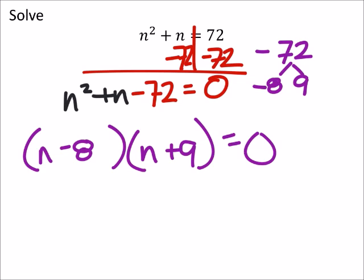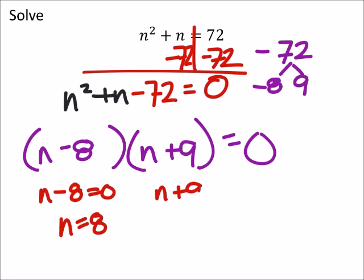And if we solve these, we've got n minus 8 equals 0, so n equals 8. And n plus 9 equals 0, so n equals negative 9.